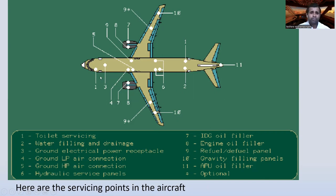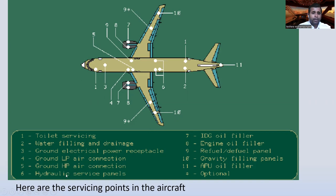The 11 servicing points are: (1) toilet servicing, (2) water filling and drainage, (3) ground electrical power receptacle, (4) ground low pressure air connection, (5) ground high pressure air connection, (6) hydraulic servicing panels — yellow, blue, and green systems, (7) IDG oil filter, (8) engine oil filter and default panels, (9) EQ default panels, (10) gravity filling panel, and (11) APU oil filter. There are also optional fillings.